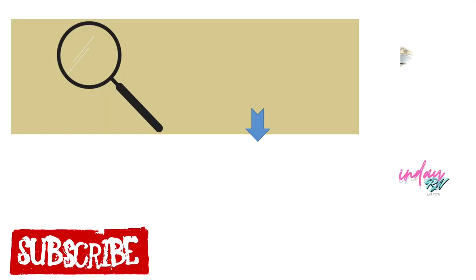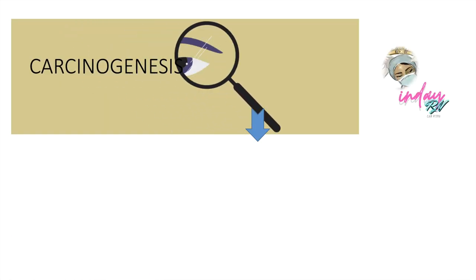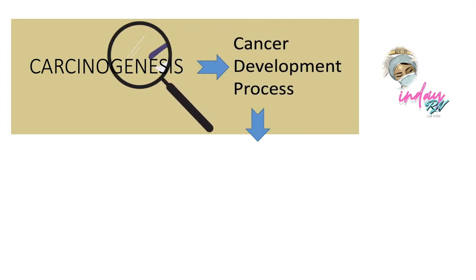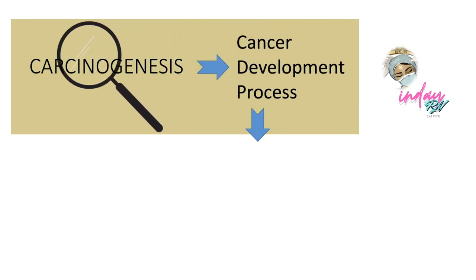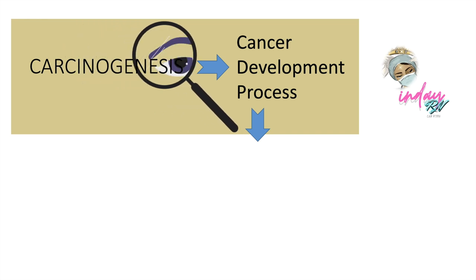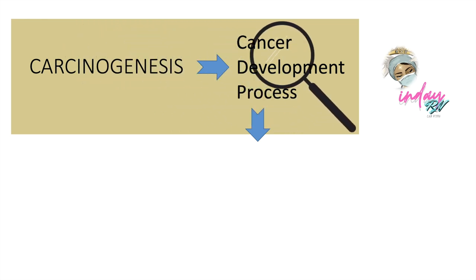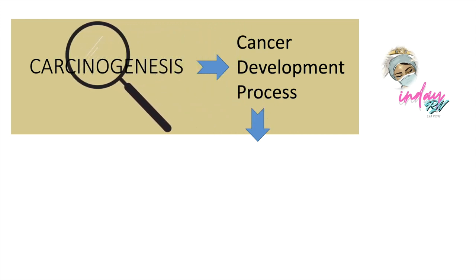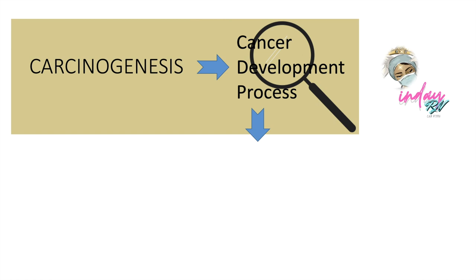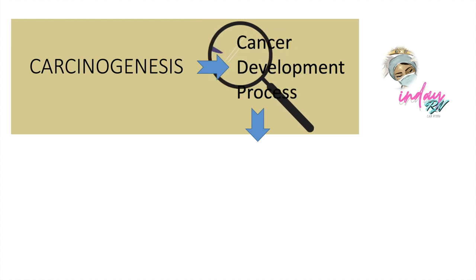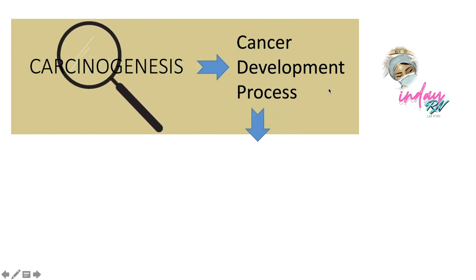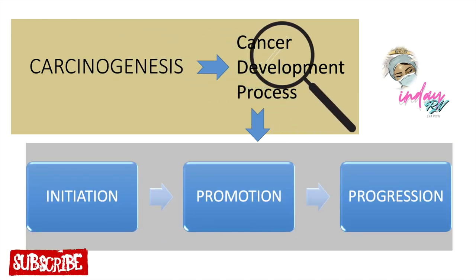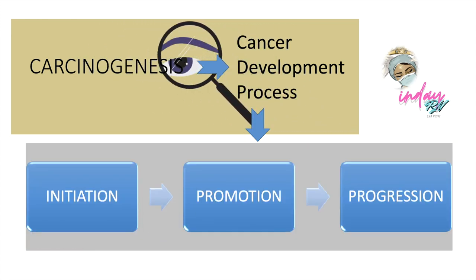Let's discuss what is carcinogenesis. Carcinogenesis means the cancer development process. Some books call this the pathophysiology of cancer. We have three stages here in carcinogenesis, which is where cancer is rooted and developed. And we have three processes: initiation, promotion, and progression.